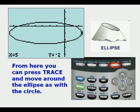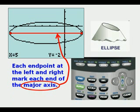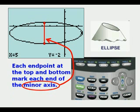From here we can press Trace and move around the ellipse as with the circle. Each endpoint at the left and right mark each end of the major axis. Each endpoint at the top and bottom mark each end of the minor axis.